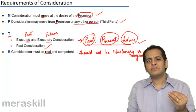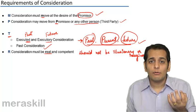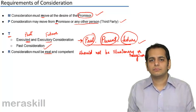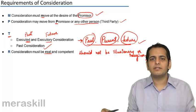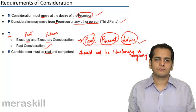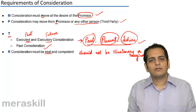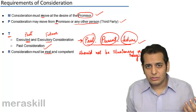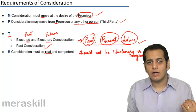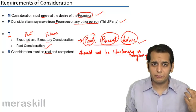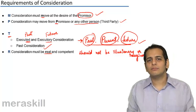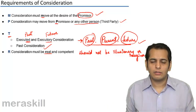So consideration should be something which has some value. It can be expressed in terms of money. Can you express sleep in terms of money? Can you express hunger in terms of money? Can you express love or happiness in terms of money? No, you can't.